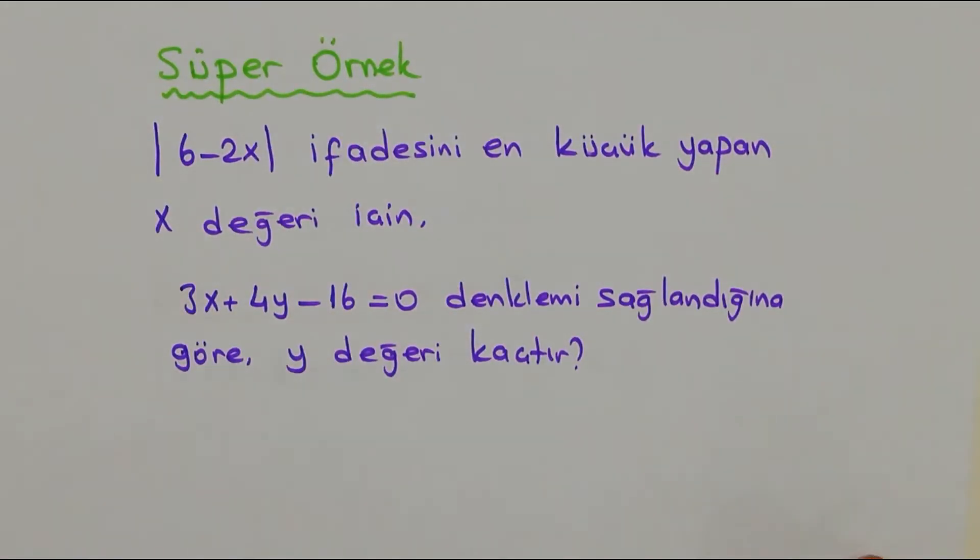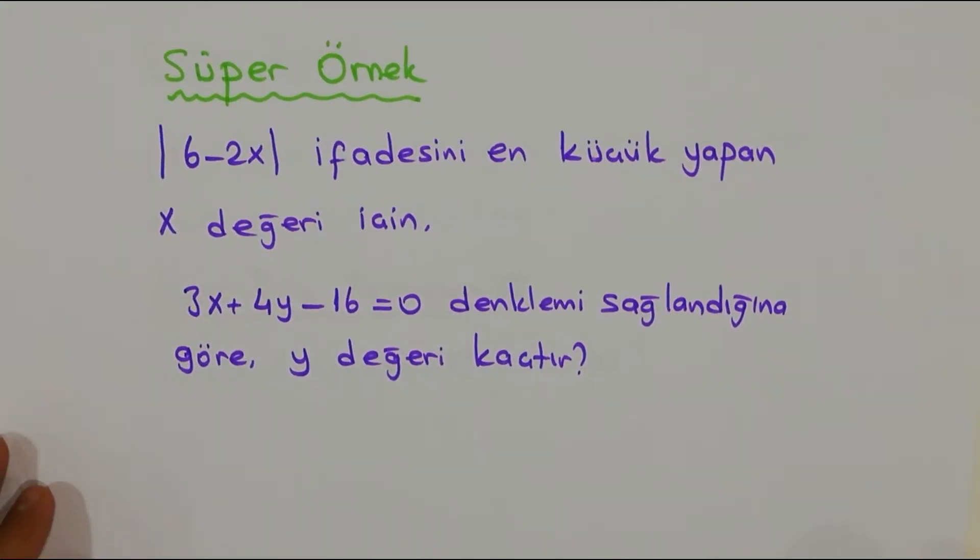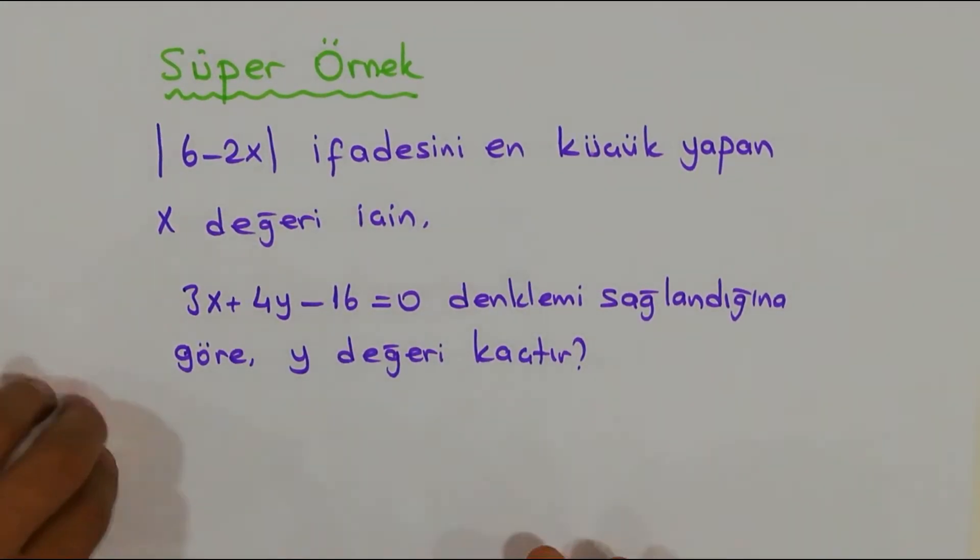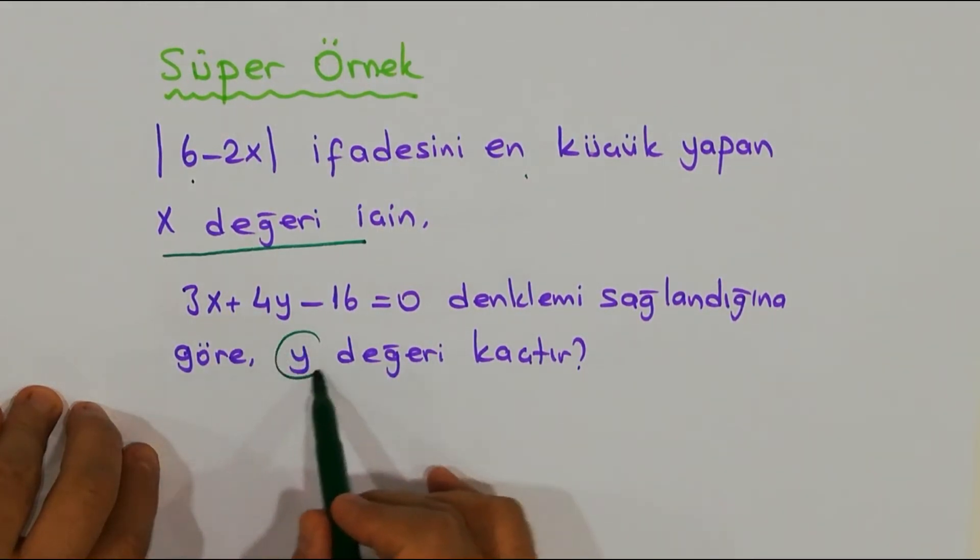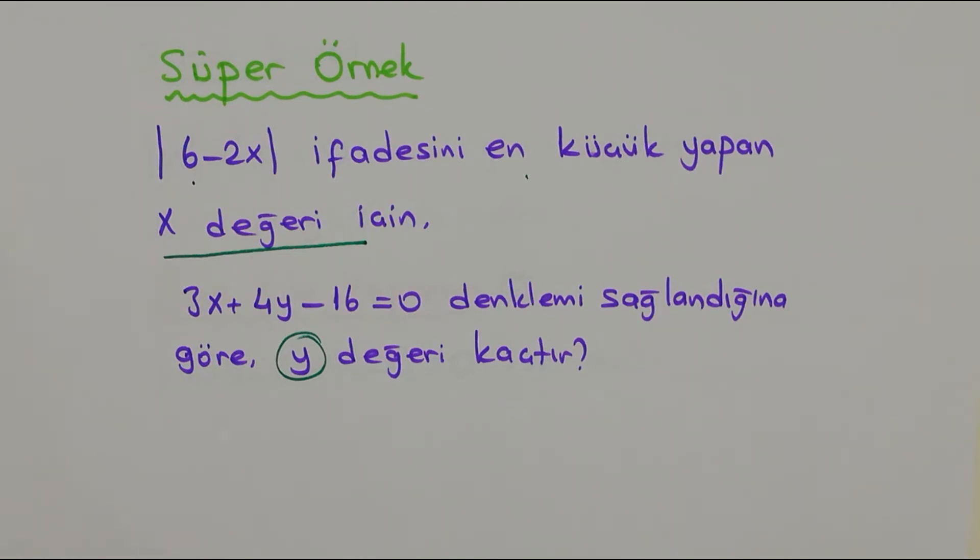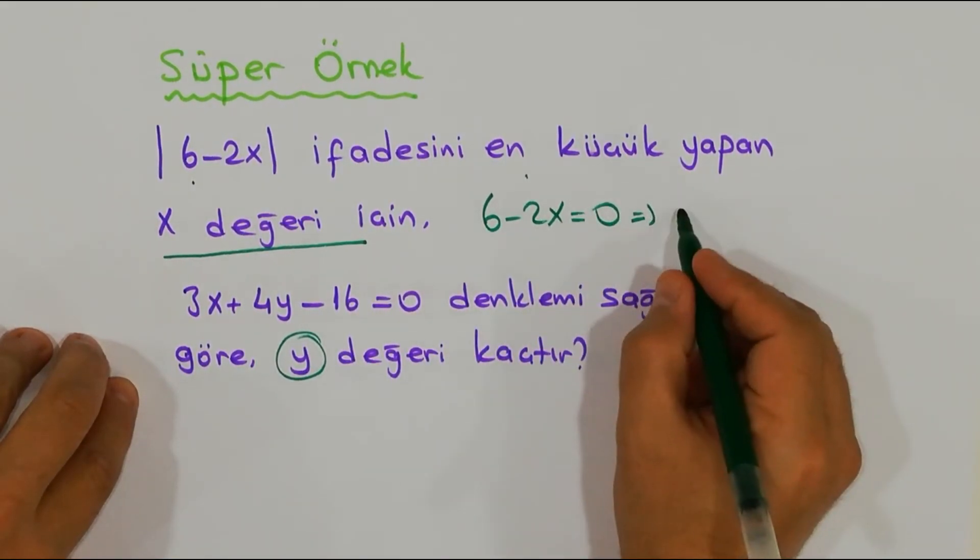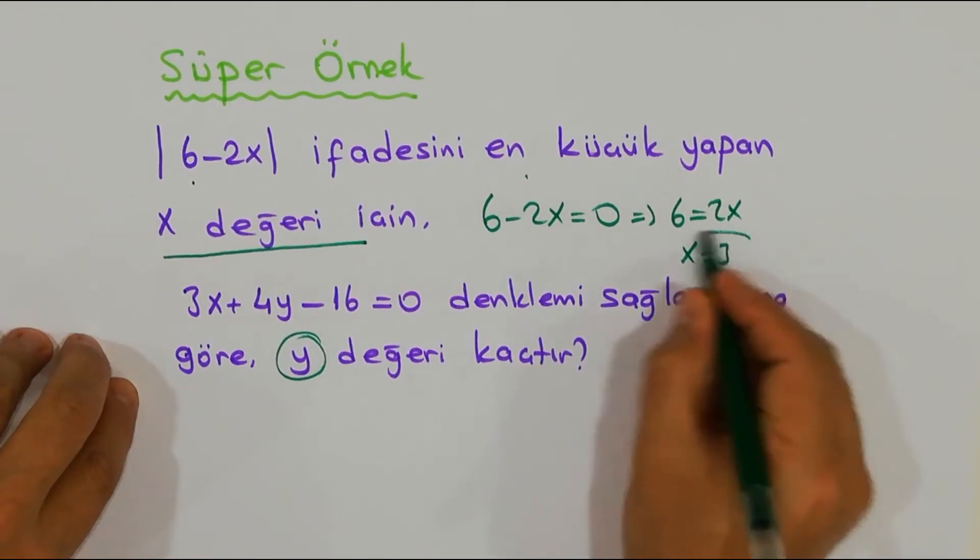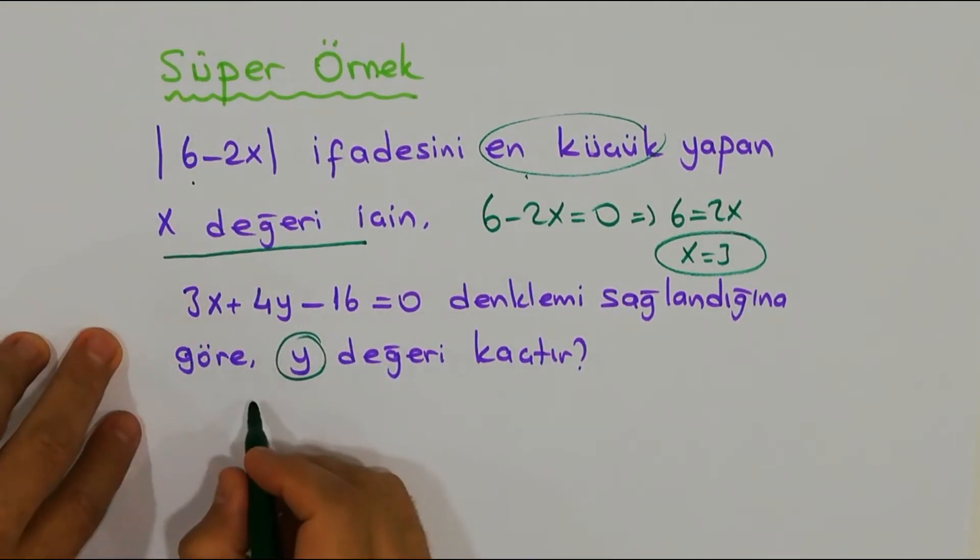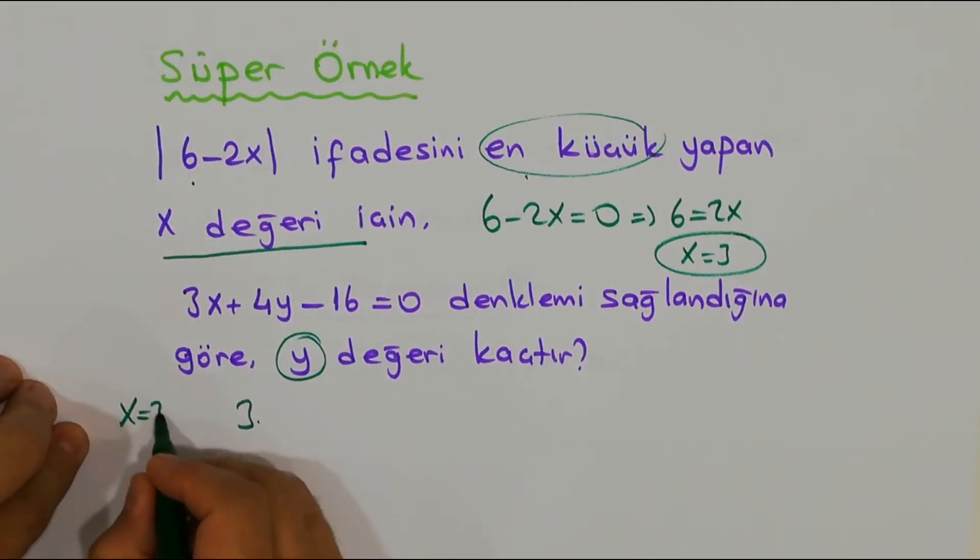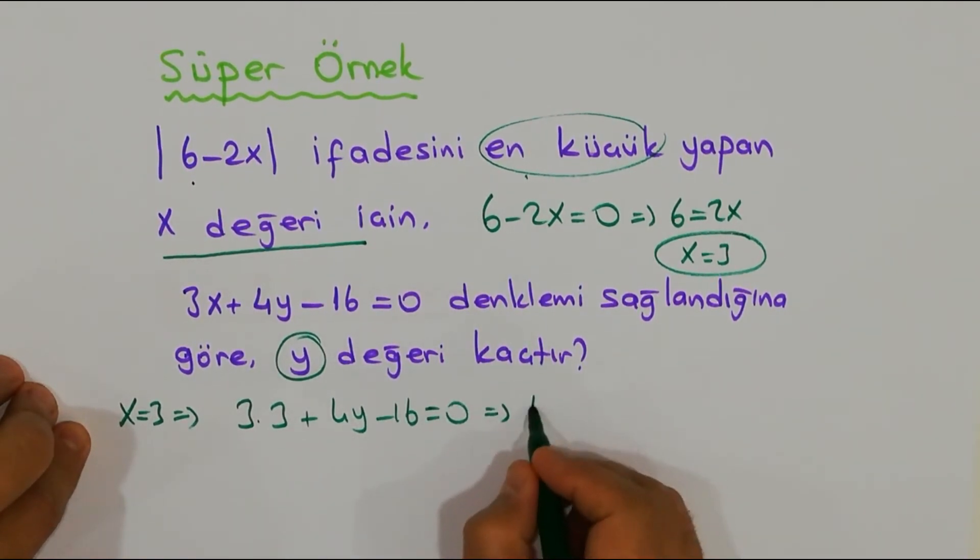Süper örnek - aynısı değil tabi, şu kısmı aynı ama soruyu biraz daha yakışıklı yaptım arkadaşlar, saçlarına biraz jöle sürdüm. Bakalım beraber çözelim. Şimdi diyor ki bunu en küçük yapan x değeri için bu denklem sağlanıyorsa, bir zahmet Allah rızası için y kaybolmuş, y'yi bulun. Peki az önce dedik ki arkadaş dedik, bunları anladık: |6 - 2x| = 0 ise 6 = 2x. Niye sıfıra eşitledim? Mutlak değerin en küçük değeri sıfır, ondan içini sıfır yapan değer x = 3 olarak burada yazıyorum arkadaşlar. Bakın şöyle yazalım.